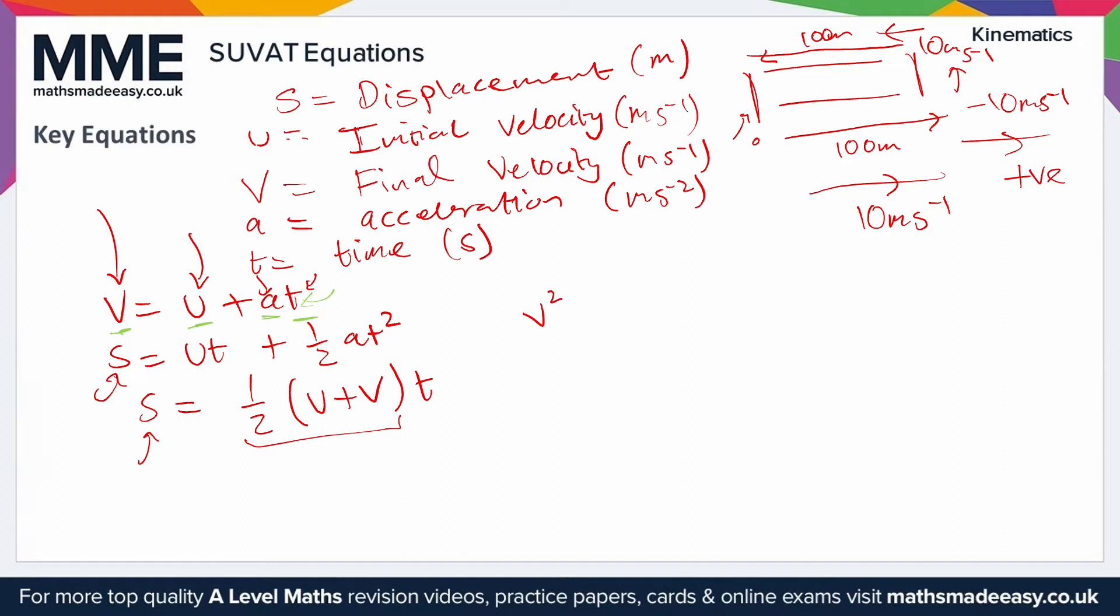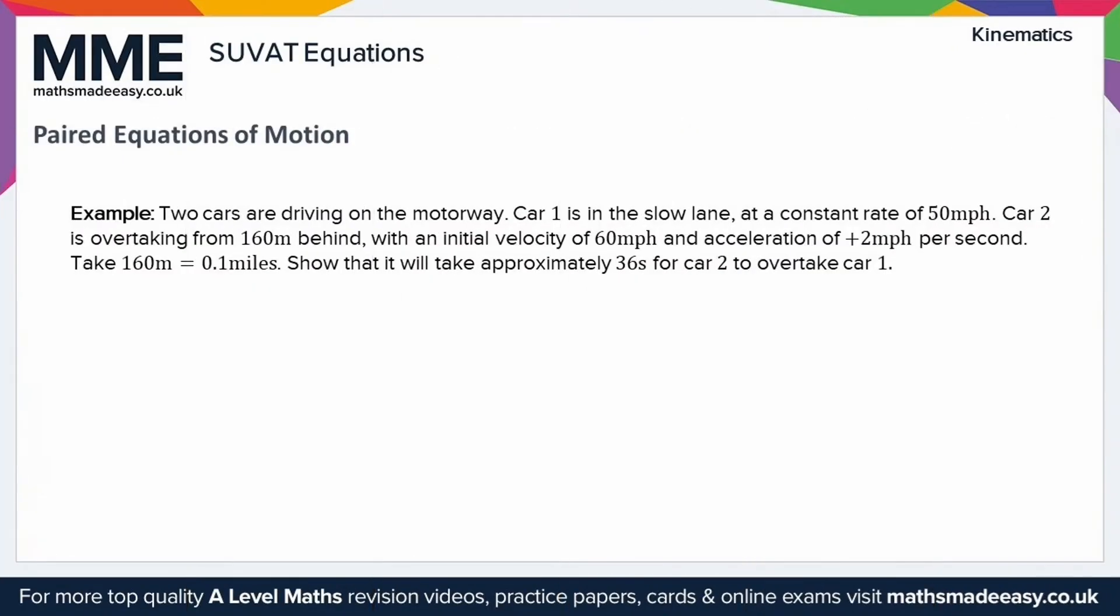Next we have V squared equals U squared plus 2AS. Again, a good way of finding the final velocity if we're not given the time. You can see it uses every variable except the time. Finally we have S equals VT minus a half AT squared. These two are very similar, but originally we had initial velocity, now we have final velocity, and then the sign was plus before and now it's minus. They're very similar but can use different variables, so it's important to know both.